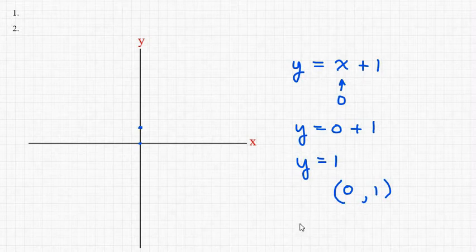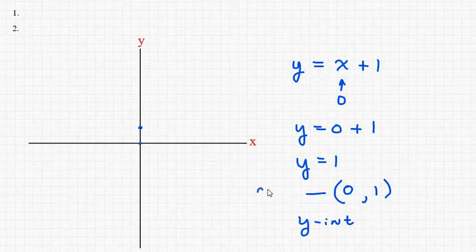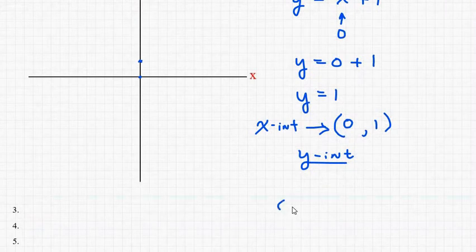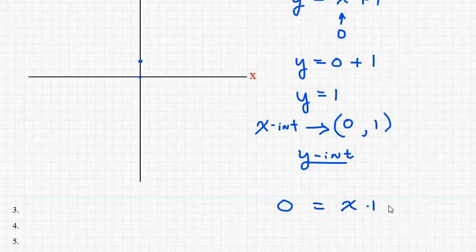This is going to be the y-intercept point that we're looking for. I should note that this is our x, this is the x-intercept point right here. So the y-intercept point is what we're looking for now. We're going to let y be 0, x plus 1, and we want to solve for x in this problem.